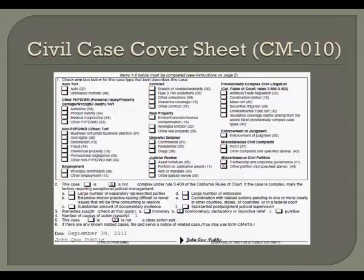In item 2, check the box Is Not Complex. In item 3, check the box for Non-Monetary. In box number 4, write the number of persons whose name is being changed. And in box 5, check the box for Is Not to indicate that this is not a class action lawsuit. Then date, print, and sign on the signature lines below. If this is being filed by two parents requesting to change the name of a child or children, both parents would print their names and sign.